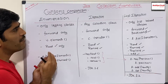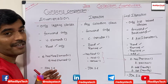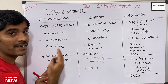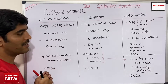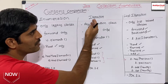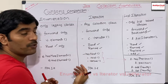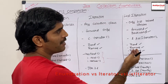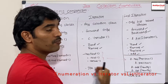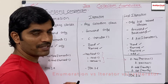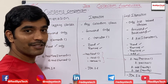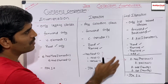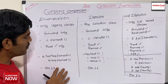Where can we use these interfaces? If I want to use Enumeration, I can only read the elements from the collection. But if I want to use Iterator, I can do both read as well as remove elements. In the case of ListIterator, I can have more features — I can read elements, remove elements, and also replace as well as add new elements inside the collection.